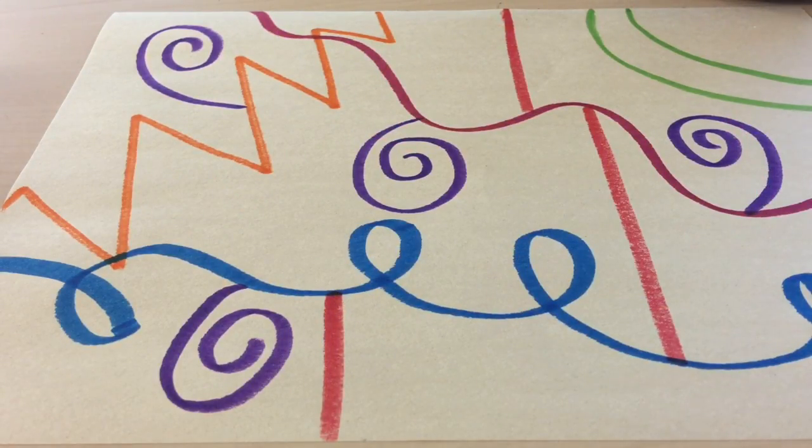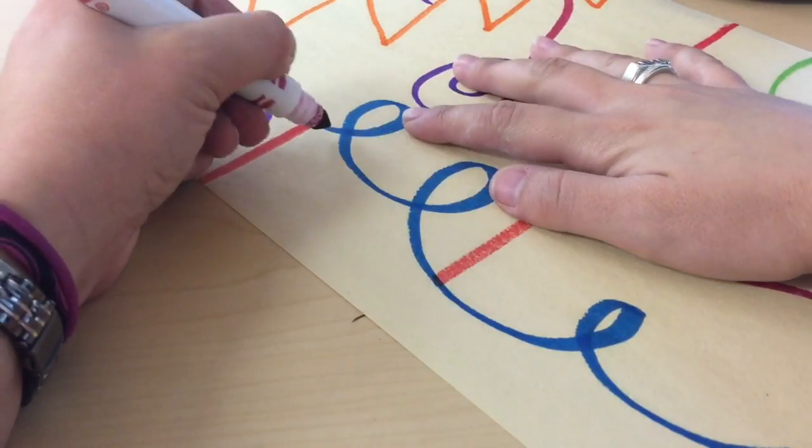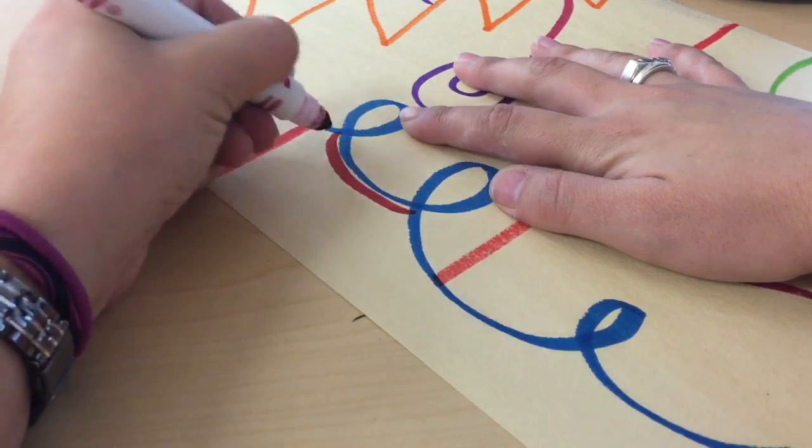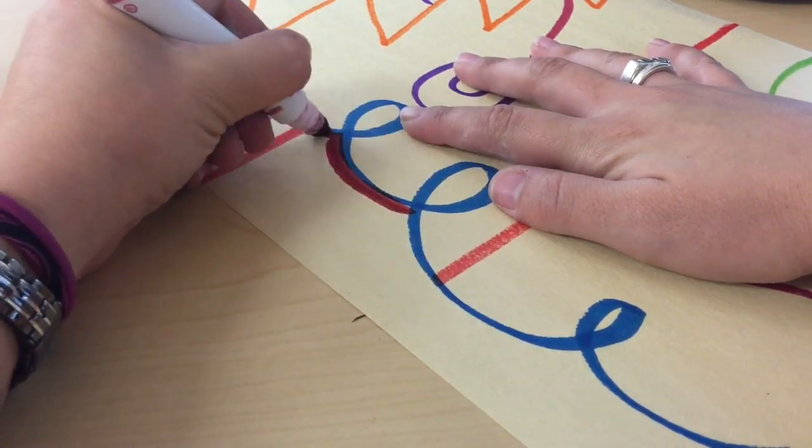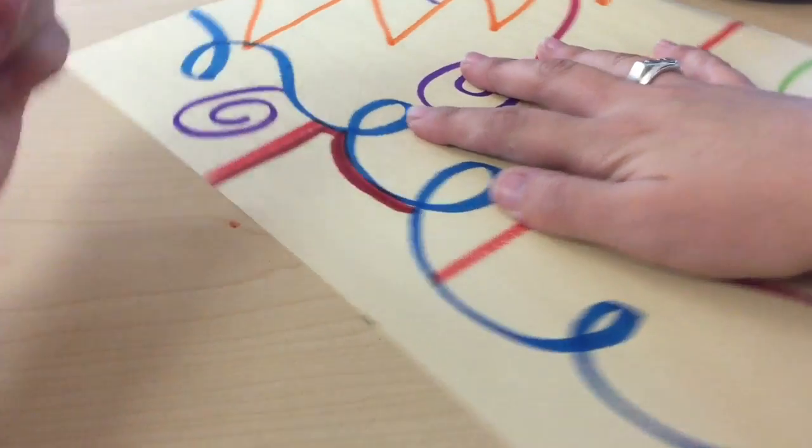When you're done drawing all your lines, then you can color in each space by itself. When you're using markers, you want to make sure that you're getting nice juicy lines.